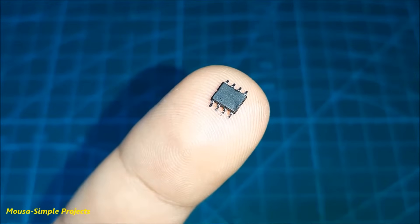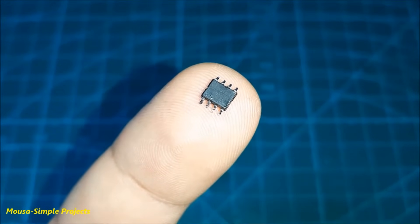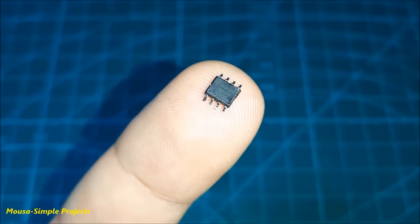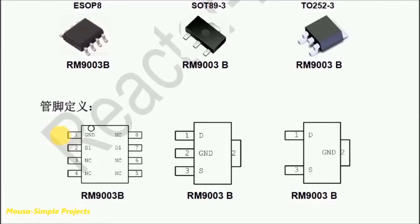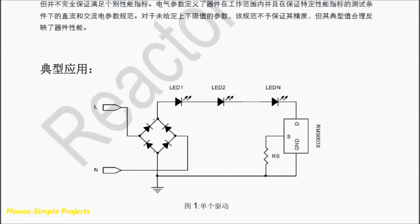This IC has 8 pins but you only need to use 3 of them: pin number 1, number 2, and 7. Here is the circuit — it is very simple. You just need a bridge diode, the IC, a resistor, and some LEDs.